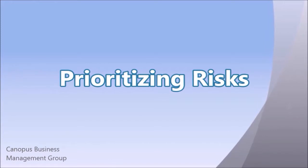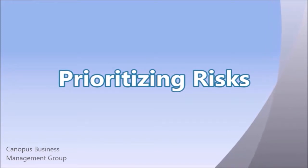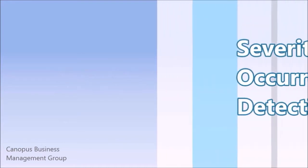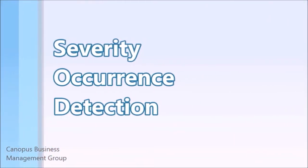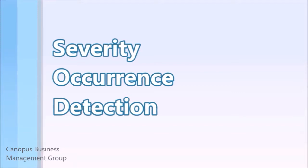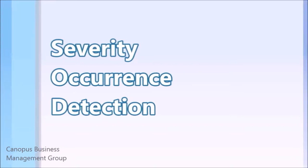In order for us to prioritize risk, there are three important rating scales that we should understand. The first is called the severity scale. The next is called the occurrence scale. And the third is called the detection scale.